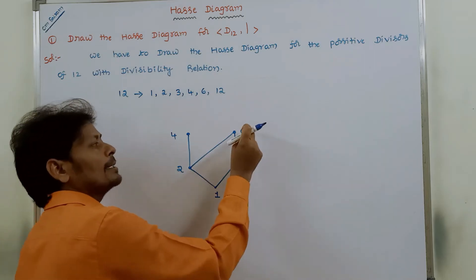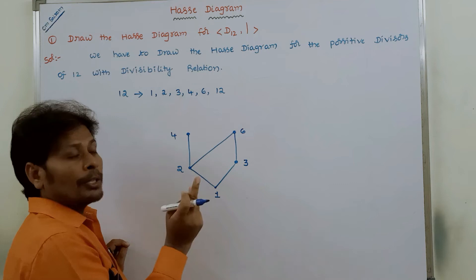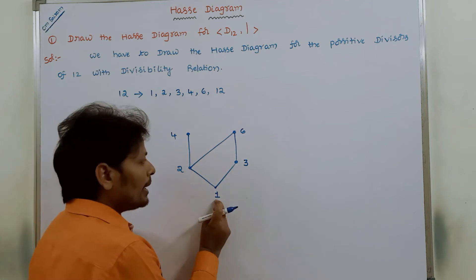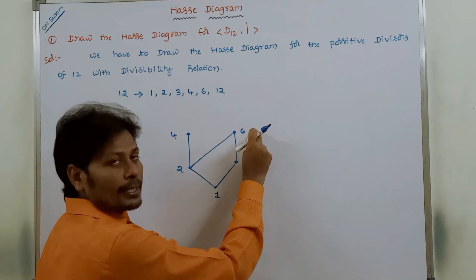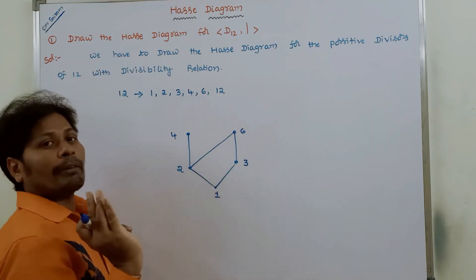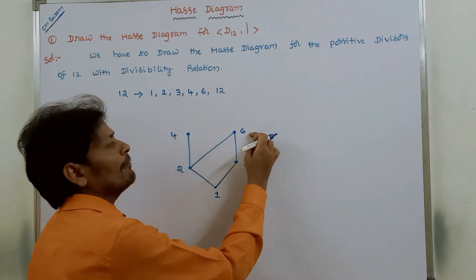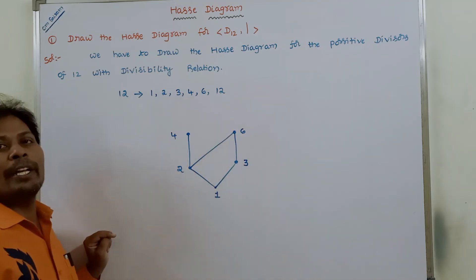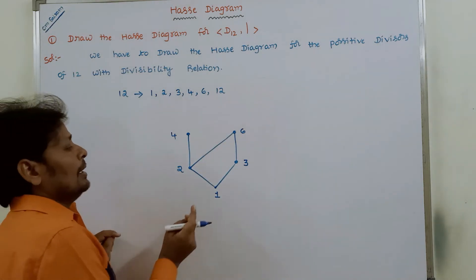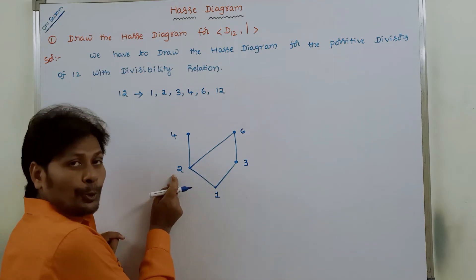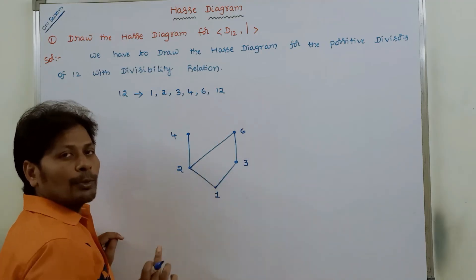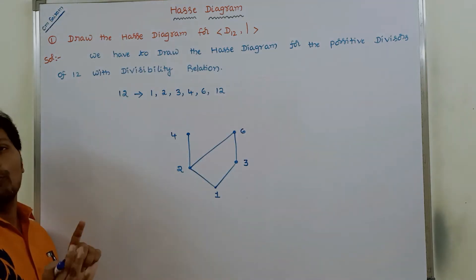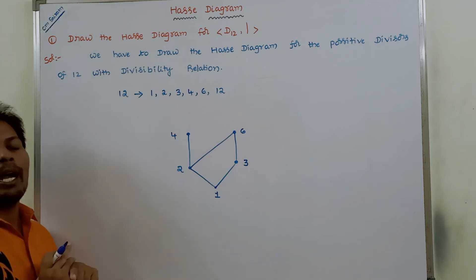Although 1 divides 6, we do not draw a direct edge between 1 and 6. This is because 1 divides 3 and 3 divides 6, so by the transitive property 1 also divides 6. Similarly, 1 divides 2 and 2 divides 6, so by transitivity 1 also divides 6. Therefore, we do not draw the edge between 1 and 6.